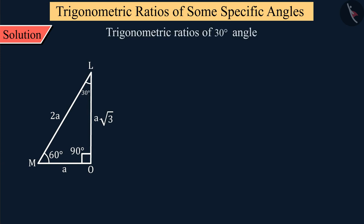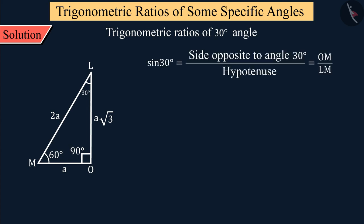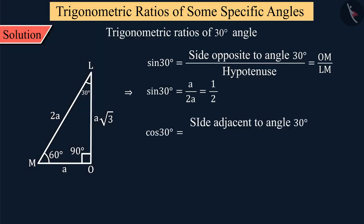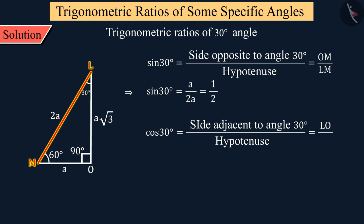Let's first find the trigonometric ratios of 30 degree angles. The value of sine 30 degrees from the right angle triangle LOM will be equal to the ratio of the opposite side of angle L and the hypotenuse. On solving this, we get the value of sine 30 degrees as 1 upon 2. Can you tell me what will be the value of cos 30 degrees? Find the ratio of the adjacent side of angle L and the hypotenuse, which when solved gives the square root of 3 upon 2.